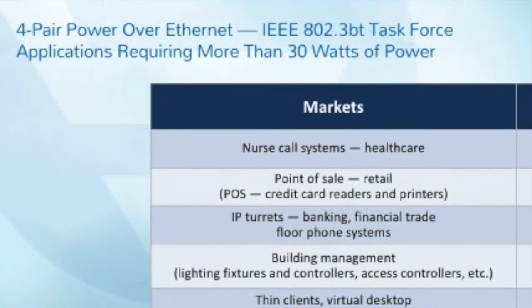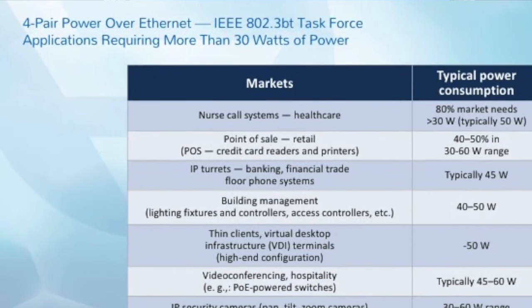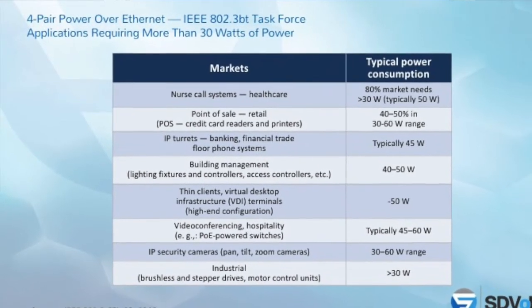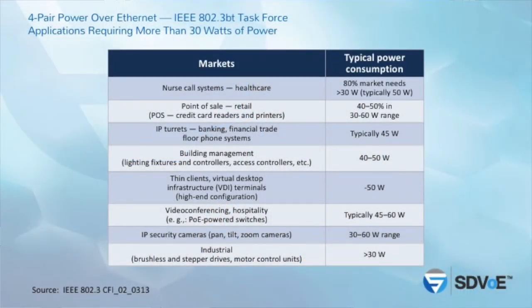There is a new standard being developed called IEEE 802.3BT — four-pair Power over Ethernet. The PSC sourcing wattage will be roughly 100 watts, and at the load, 70 watts. The applications that could take advantage of greater than 30 watts are quite diverse: building management systems like lighting fixtures, virtual desktops, IP-based PTZ security cameras with heater blowers, and from an AV perspective, monitors, switches, and other devices. This standard is on track to be published by the end of 2018, with a fully specified IEEE specification in place.